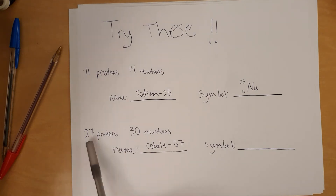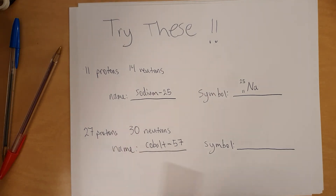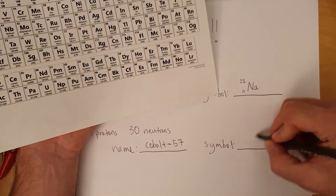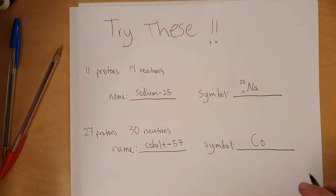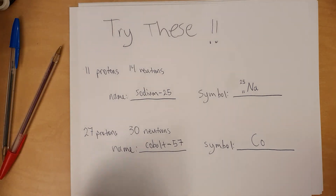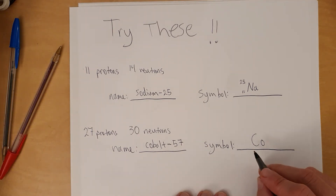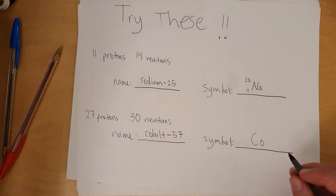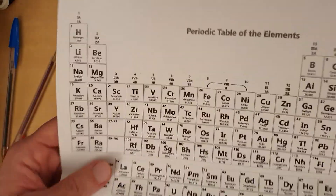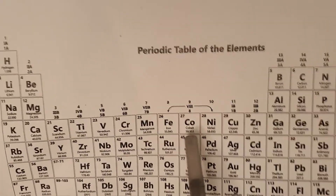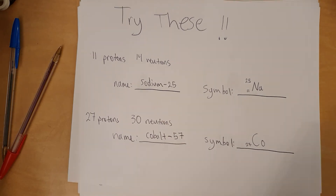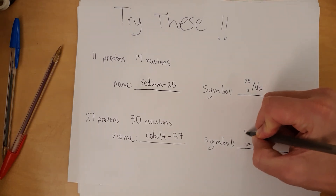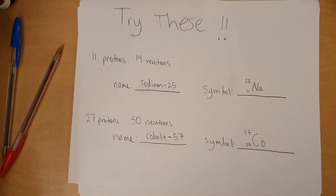For the symbol of cobalt-57: cobalt is capital C, lowercase o. The atomic number — 27 protons — goes on the bottom left, and the mass number 57 goes on the top left. For sodium-25, sodium is Na, with 11 on the bottom left and 25 on the top left.